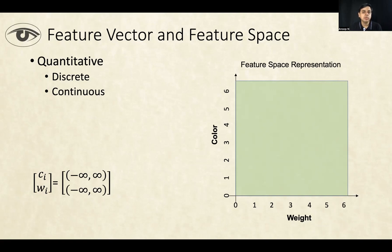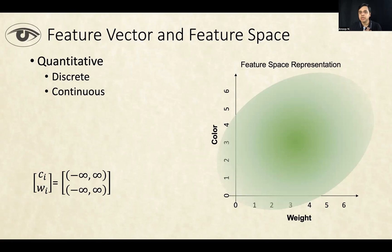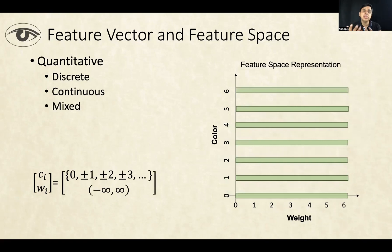Now, it's not necessary that continuous features always have a uniform spread. For example, there could be cases in which most of the feature vectors are concentrated in a certain part of the feature space and are more spread out or less likely in other parts. These are usually modeled using probability density functions. This applies to both discrete and continuous cases — it does not mean the spread has to be uniform. These are the two types of quantitative features: discrete and continuous. You don't need all features to be discrete or all to be continuous — you can have a mixed bag.